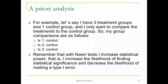For example, let's say I have three treatment groups and one control group, and I only want to compare the treatment groups to a control group. So my a priori comparisons would be treatment one to control, treatment two to control, treatment three to control. Remember, the fewer tests that I do, the less likelihood I am of making a type one error. So it's good to reduce the number of tests if you can, but this has to be done before your analyses.